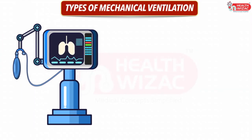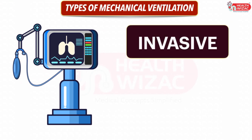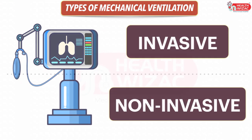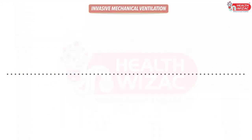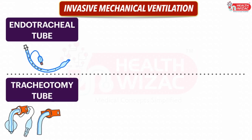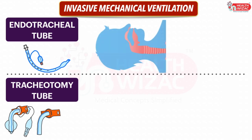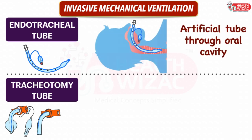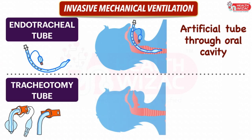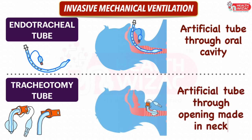Mechanical ventilation is generally of two types: invasive and non-invasive ventilation. In invasive ventilation, the patient is connected to the ventilator through an endotracheal tube or tracheostomy tube. Endotracheal intubation is placing an artificial tube in the trachea via the mouth, whereas tracheostomy is placing a tube in the trachea through an artificial opening created in the neck.